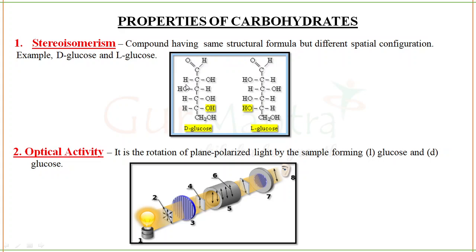If the hydroxyl group is on the left side, it is called L-glucose — remember L for left. Right-side OH is D-glucose. In the most common form, D-glucose is present. D-glucose is the most common one.